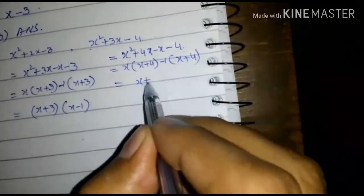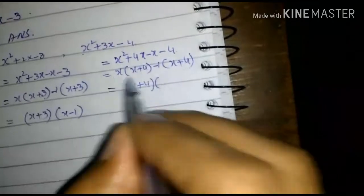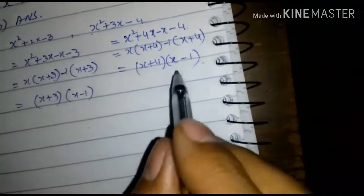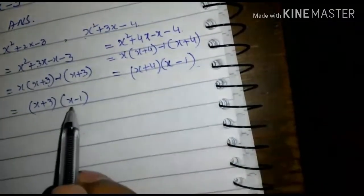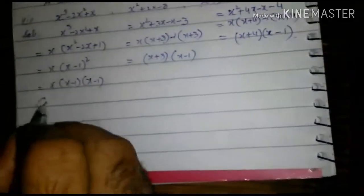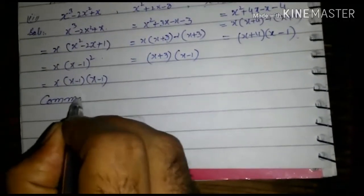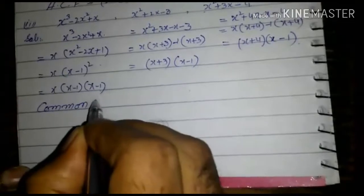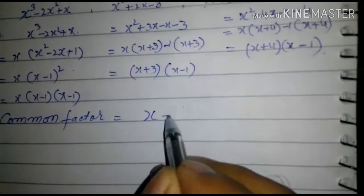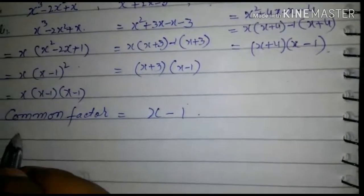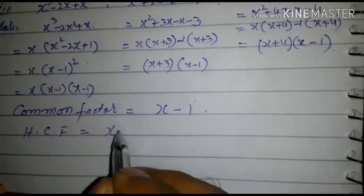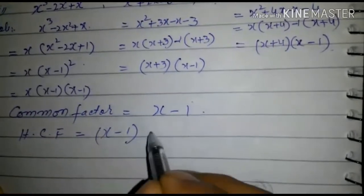x + 4 is common in both terms, leaving (x + 4)(x - 1). Now looking at all three factorizations: x(x - 1)(x - 1), (x + 3)(x - 1), and (x + 4)(x - 1). The common factor is x - 1, hence HCF = x - 1.